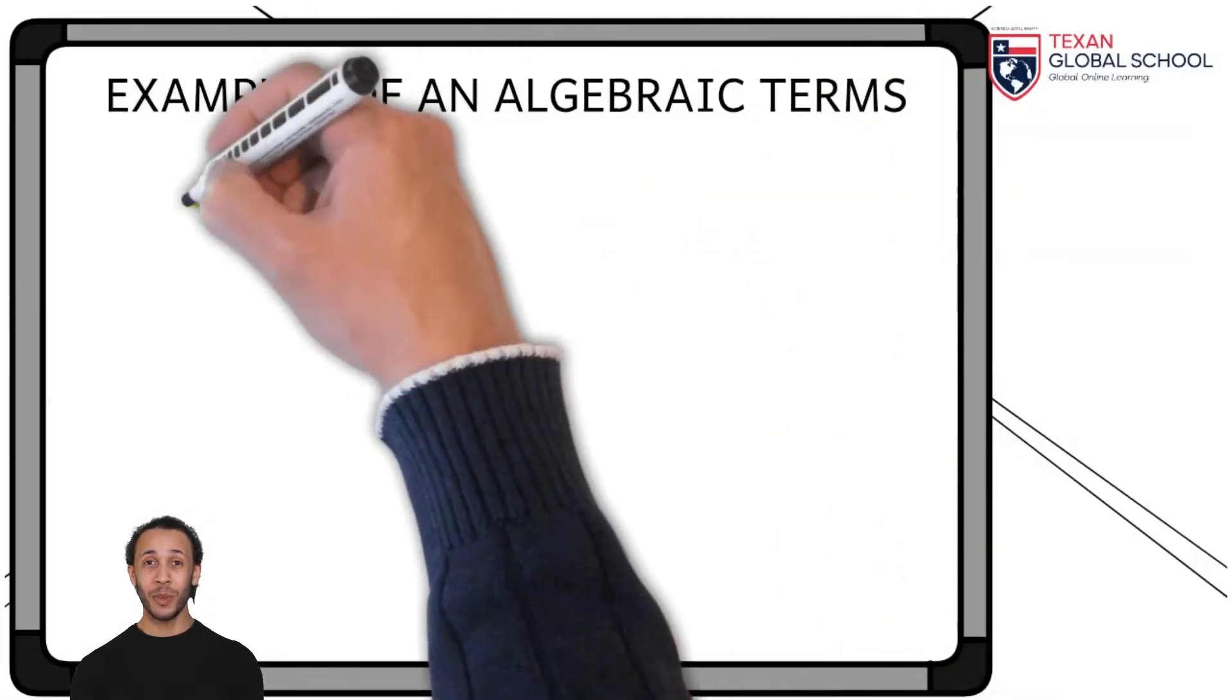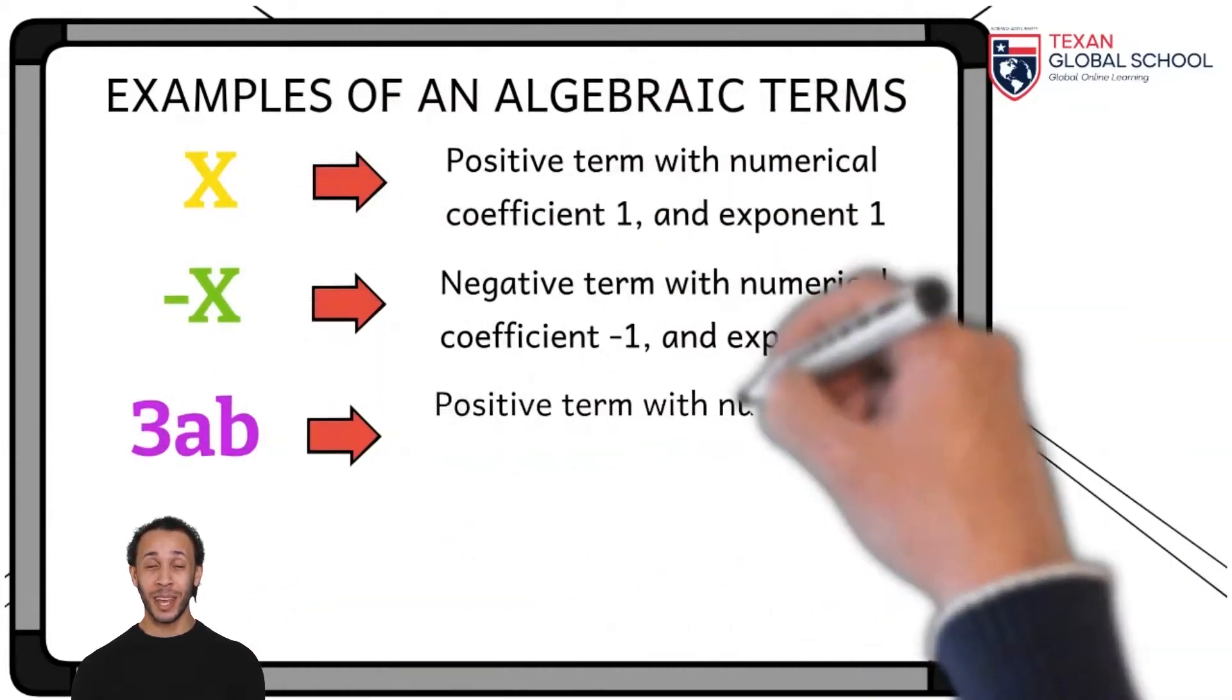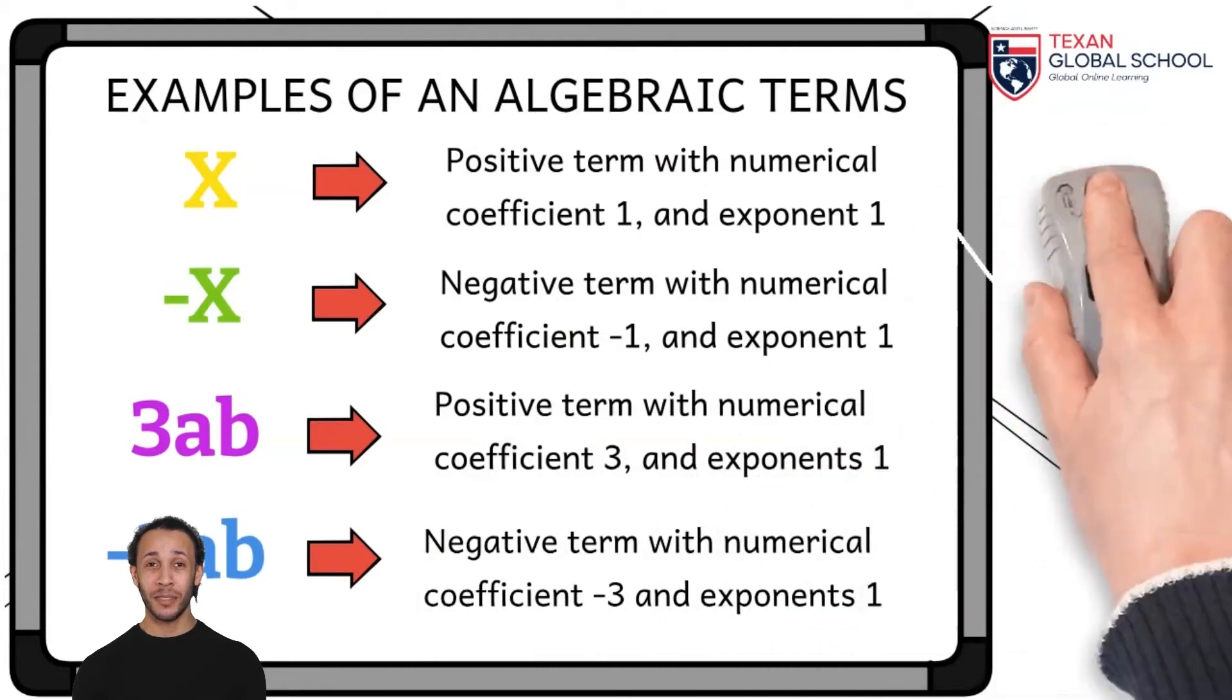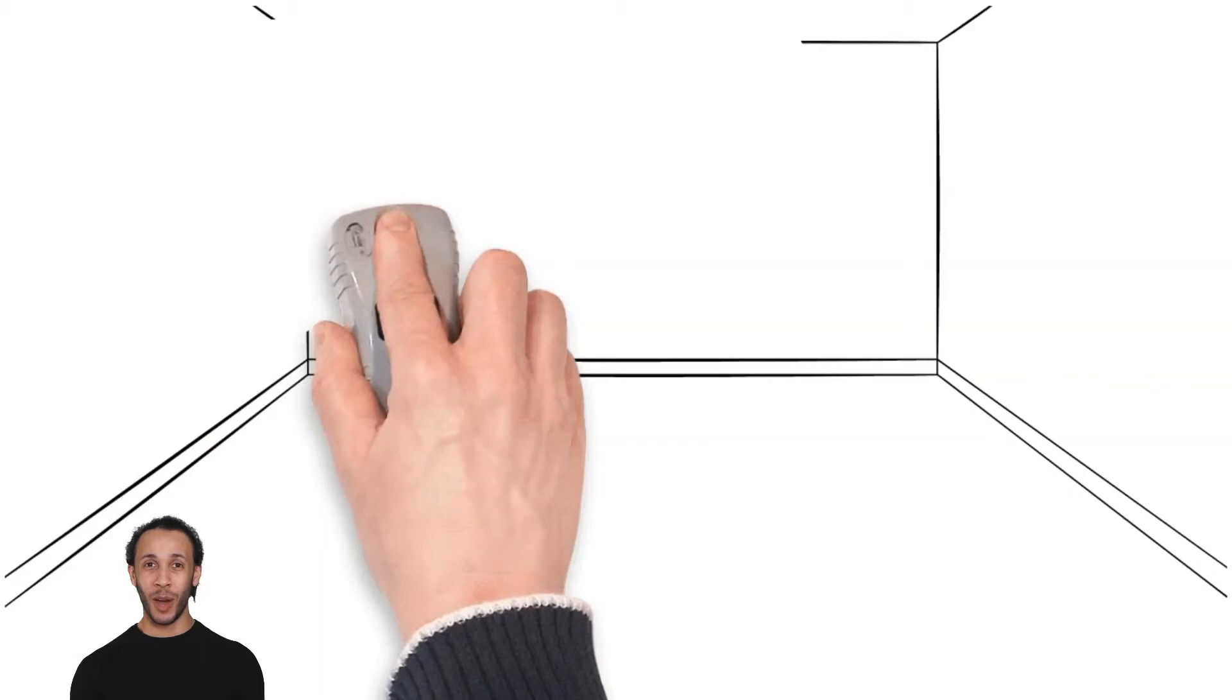We can compare more examples of algebraic terms on the board. The algebraic term 3ab, for example, is a positive algebraic term with a numerical coefficient plus 3, and the bases are raised to the first power.